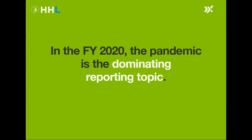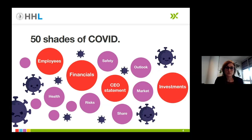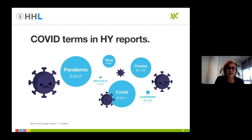As you most likely already have noticed, the pandemic is the dominating reporting topic for 2020. We named today's webinar '50 Shades of COVID' because of the scope of areas within annual reports the pandemic is affecting: the financials, employees, investments, outlook, market, risks, just to name a few. If you think about it, there probably are even more than 50 shades in total.